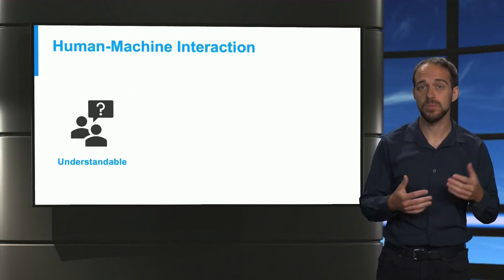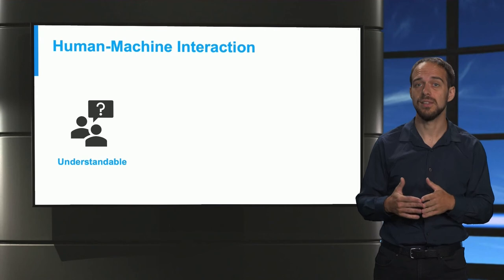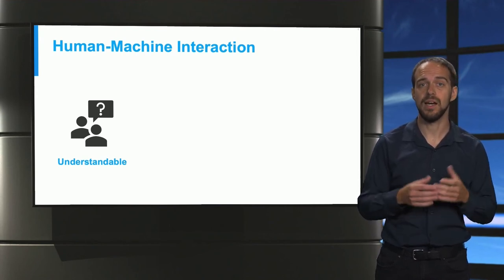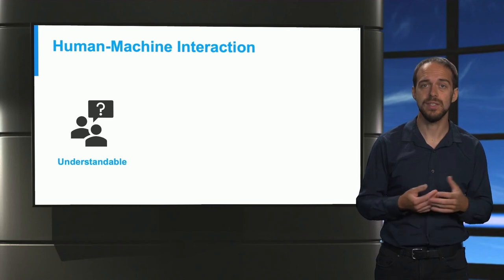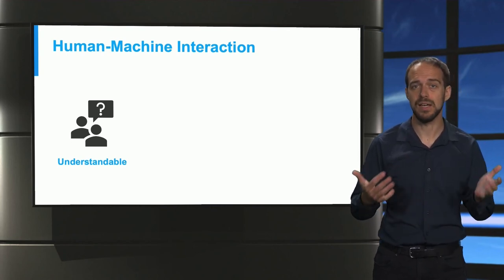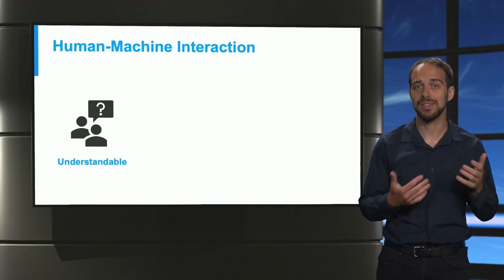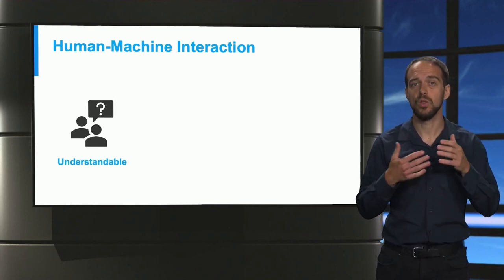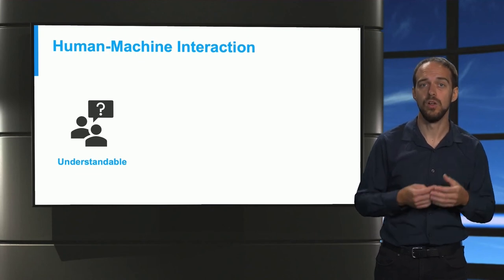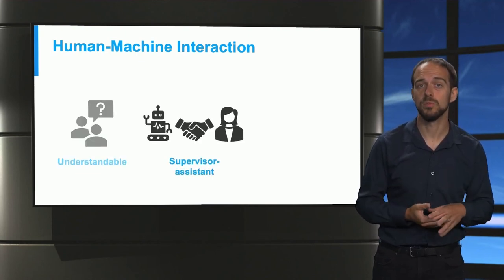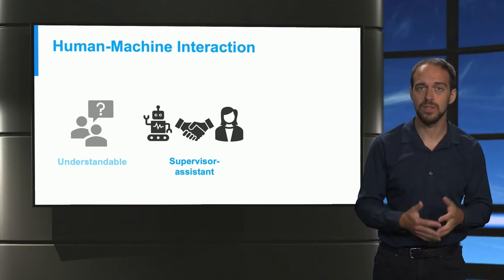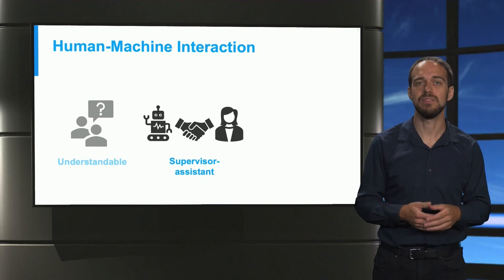One challenge in terms of the human interaction is that these machine learning models need to be understandable by humans. Otherwise, they cannot be used. For instance, an expert system operator is a safety critical task and without understanding machine learning assistance, it is tough for engineers to build up this trust. Also, when humans use machines to assist them in making decisions and observing the grid, building up trust is very important.